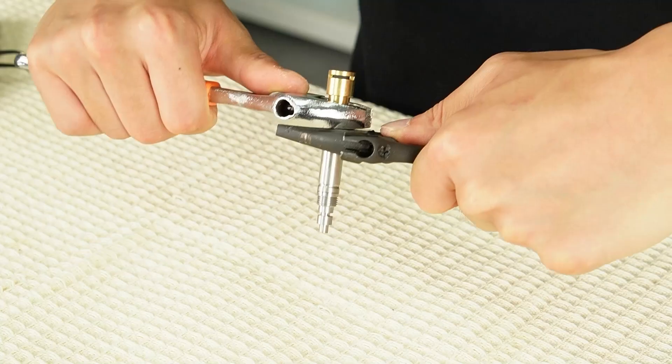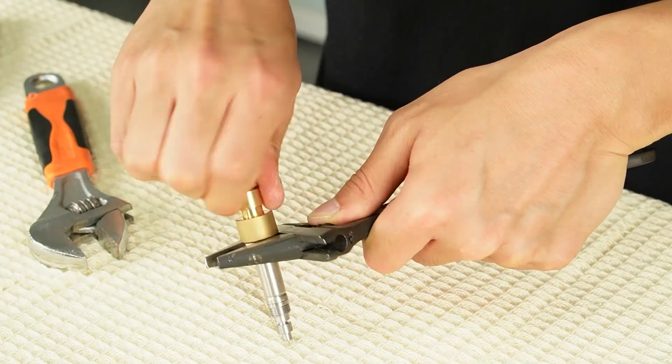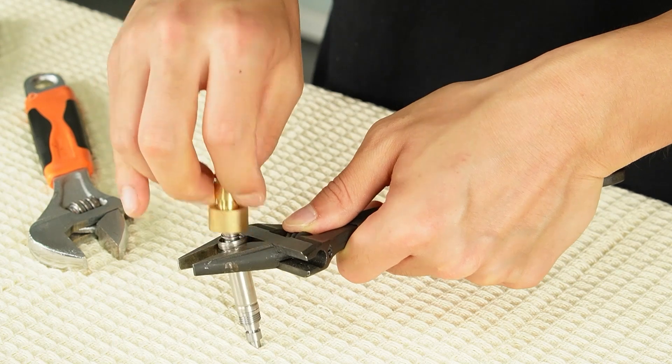As before, loosen it until you can unscrew the connector by hand. Remove the brass connector from the valve body.